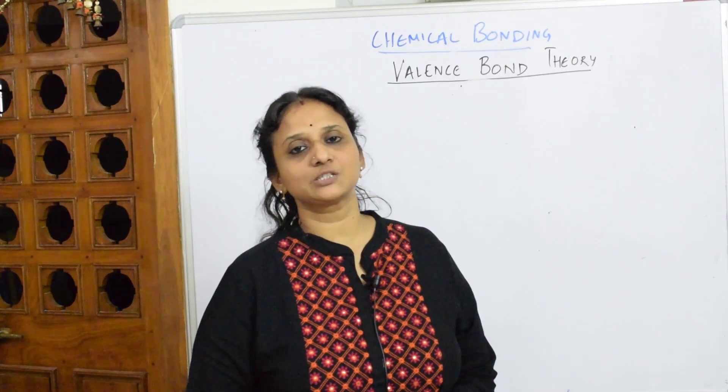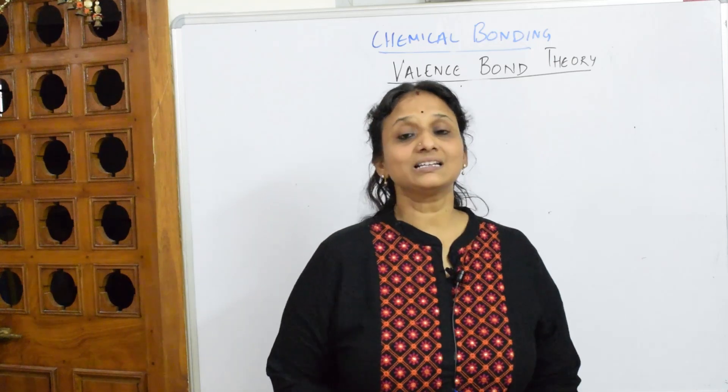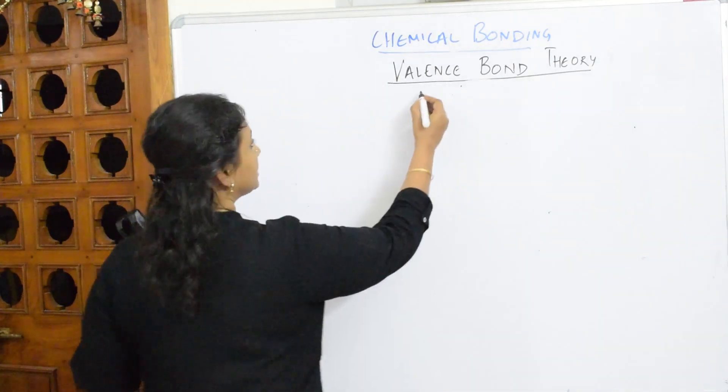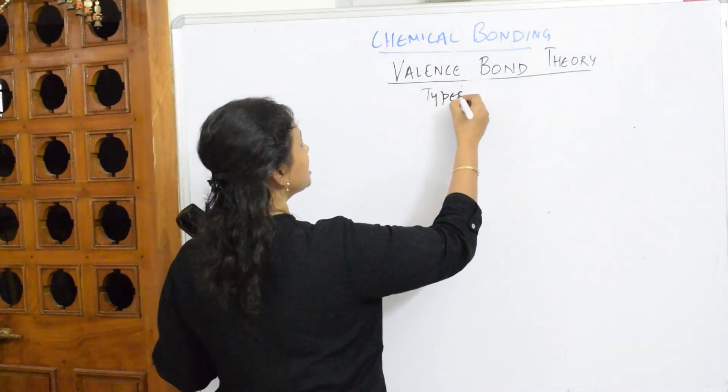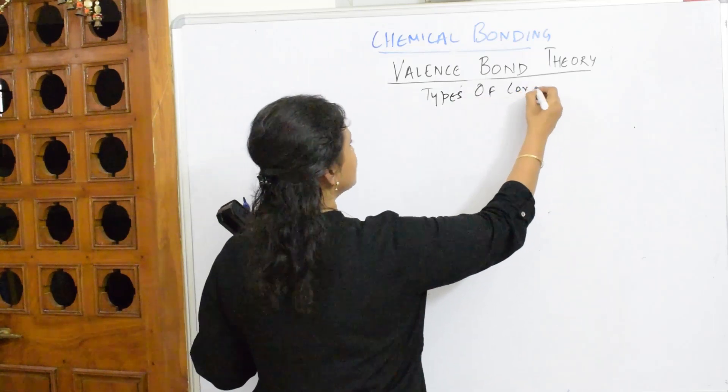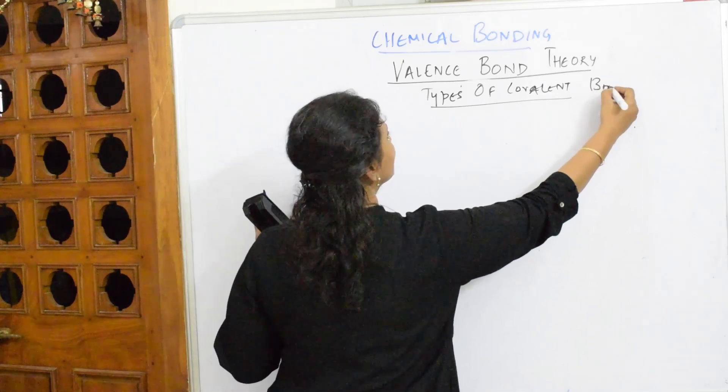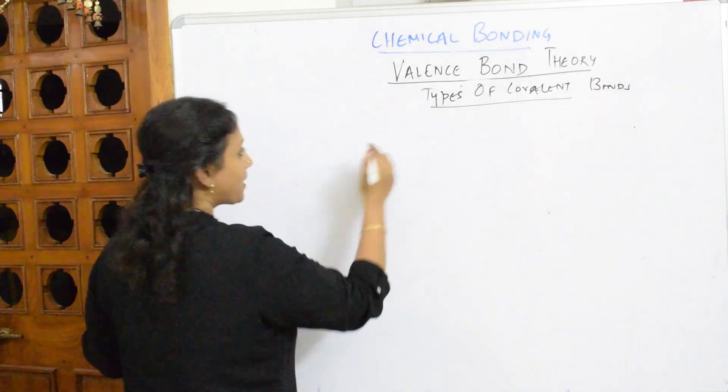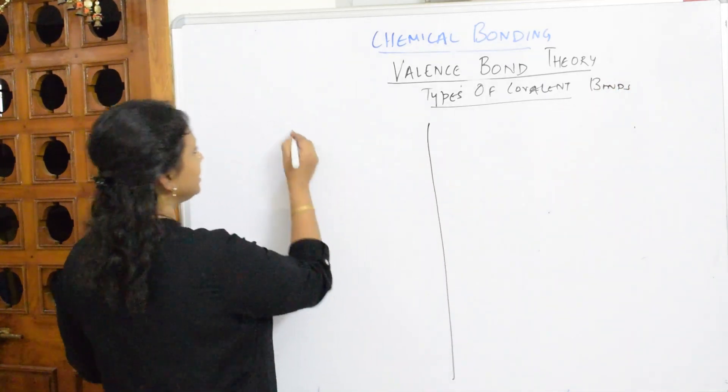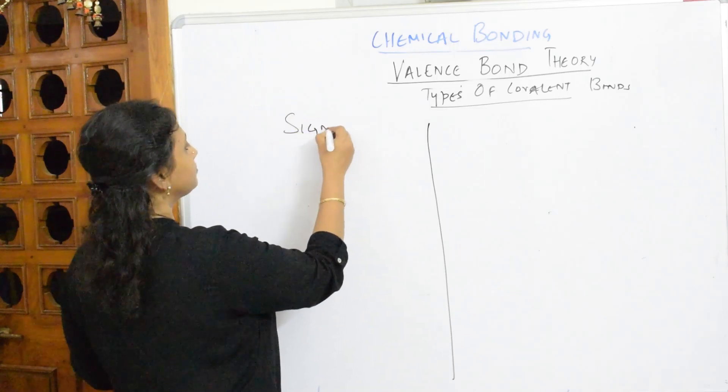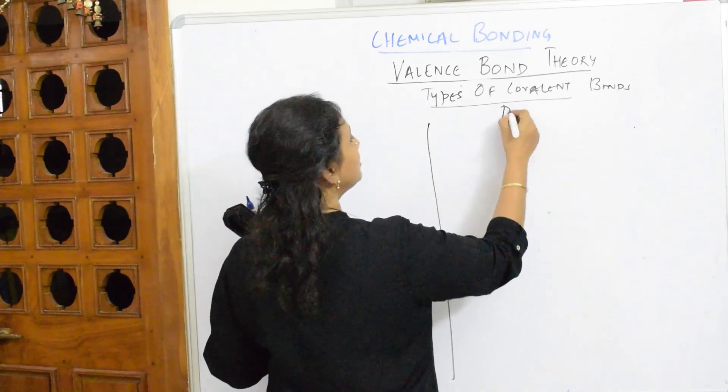We'll come to the third topic of valence bond theory, that is VBT theory, that is types of covalent bond. So when I speak about types of covalent bond, covalent bonds are basically two types. First would be your sigma bond, second would be your pi bond.